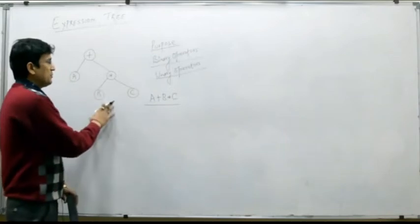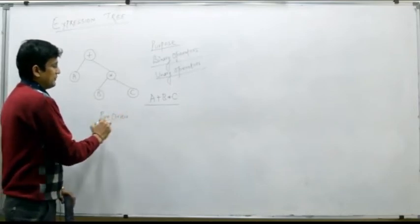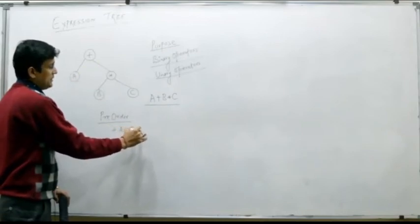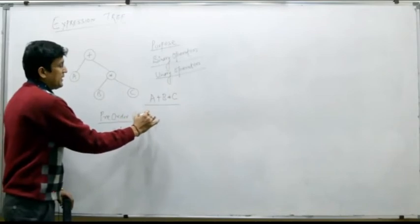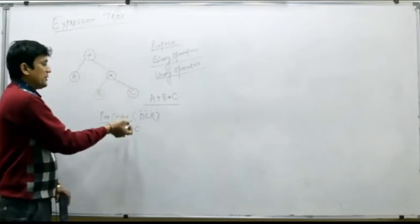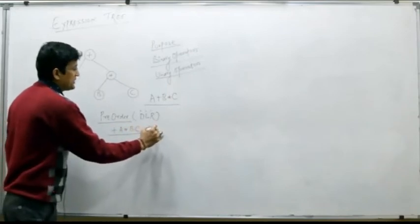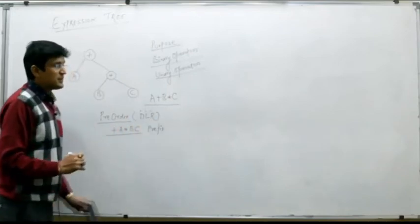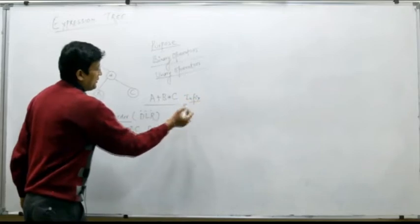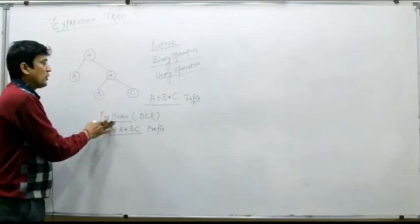The purpose of building this tree is that if you perform the pre-order traversal on this tree, this will result in plus A multiplication B and C. Pre-order traversal means DLR — data, left, and right. So if you perform the DLR operation or the pre-order traversal on this tree, you will find this expression, which is actually the prefix equivalent of the given infix expression.